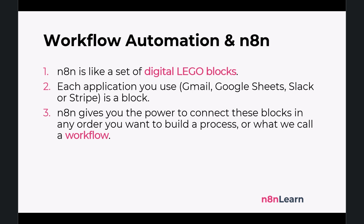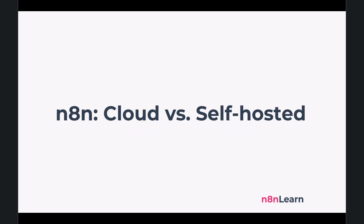Okay, so now you know what n8n is and why it's so powerful. The next question is: where does it run? Well, n8n gives you two main options — self-hosted or n8n cloud. Let's use an analogy. Think about a house. Self-hosting is like building your own house. You're given the blueprints — the n8n software — and you are responsible for everything else: buying the land (a server), laying the foundation (installing the operating system), and handling all the construction, plumbing, and security yourself. The pros are you have ultimate control and privacy. The cons are that you are responsible for all the maintenance, security, and updates — it requires technical expertise.